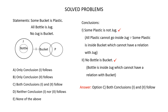Conclusion 2: No bottle is bucket. In the Venn diagram, jug cannot have any relation with bucket, and since all bottle is inside jug, clearly all bottle also cannot have any relation with bucket. This means no bottle is bucket — the conclusion no bottle is bucket is correct. Conclusion 2 follows. Both conclusions 1 and 2 follow — the correct answer is option C.